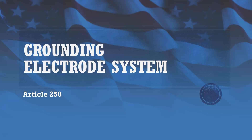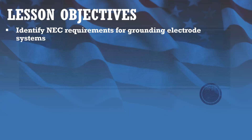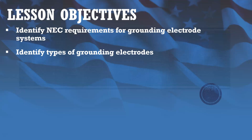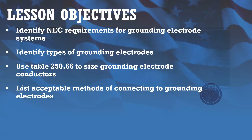This is going to be our fourth lecture of Module 2. In this lecture, we're going to be going over grounding electrode systems, as covered in Article 250. Our objectives for this lecture: we're going to be identifying the NEC requirements for grounding electrode systems, identify the types of grounding electrodes, and we're going to use Table 250.66 to size grounding electrode conductors. We're also going to list acceptable methods of connecting to grounding electrodes.